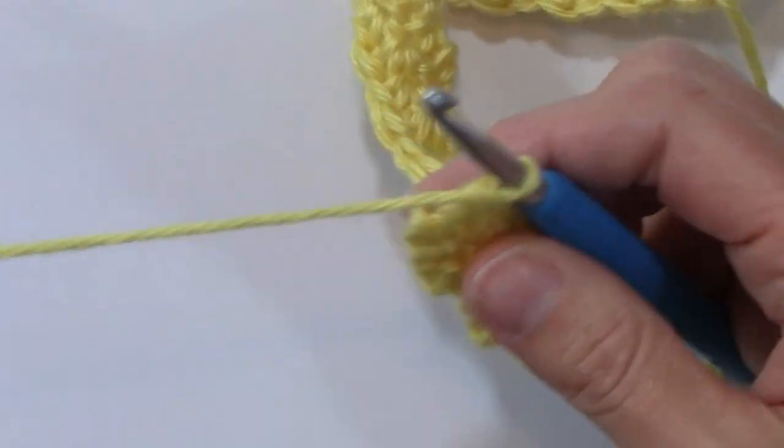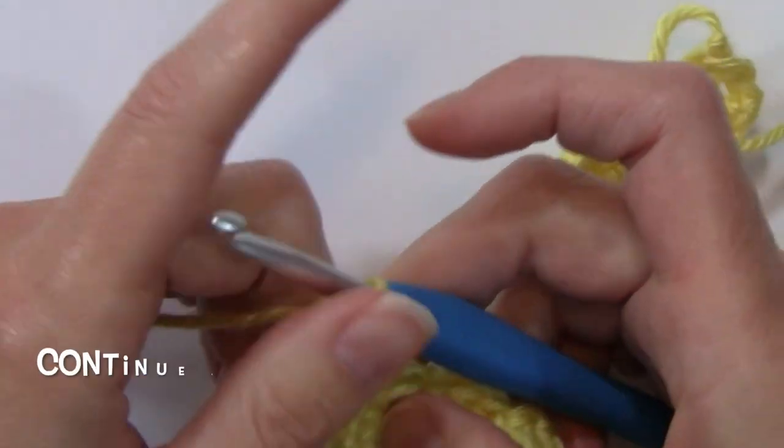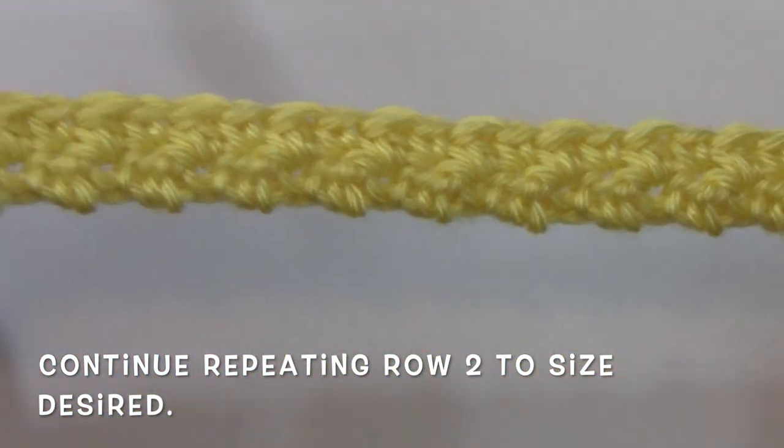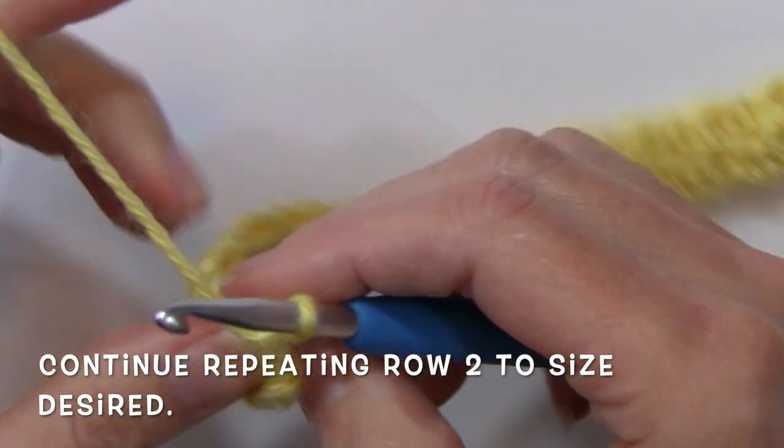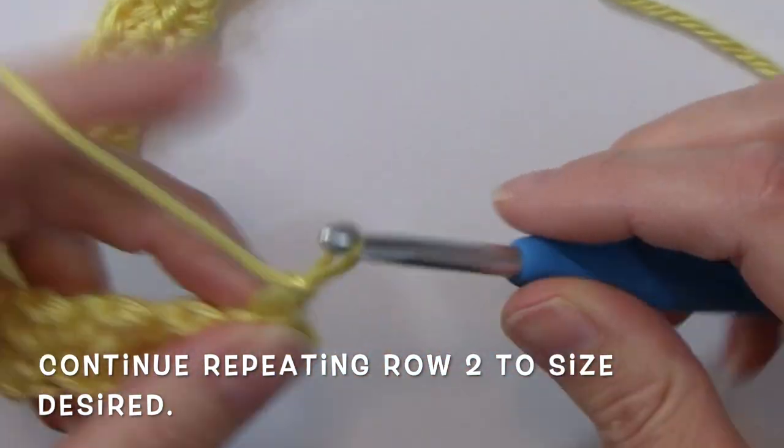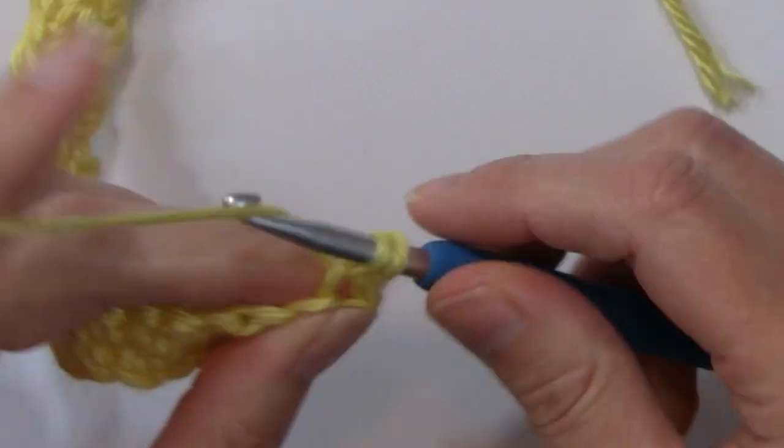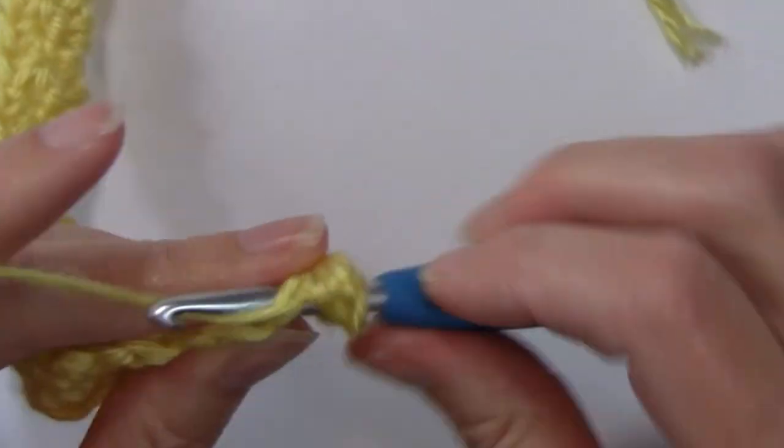So really, that is it. You're going to be repeating row two to the size desired. So you're just going to continue on with row three by chaining one, working a single crochet in the first, double crochet in the next. So I hope that you have found this tutorial helpful.